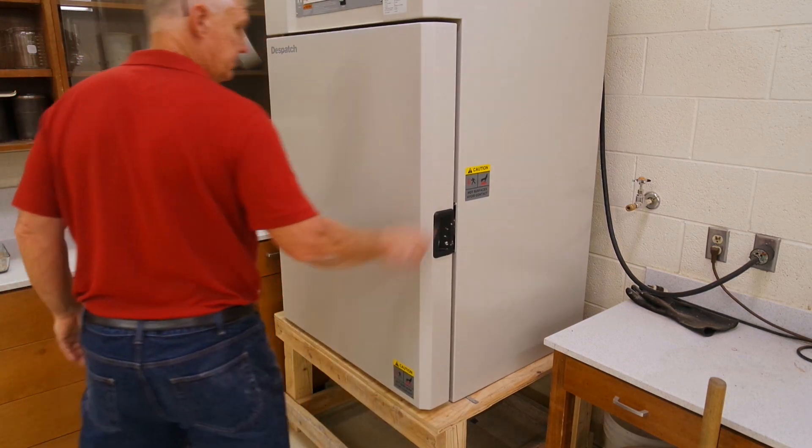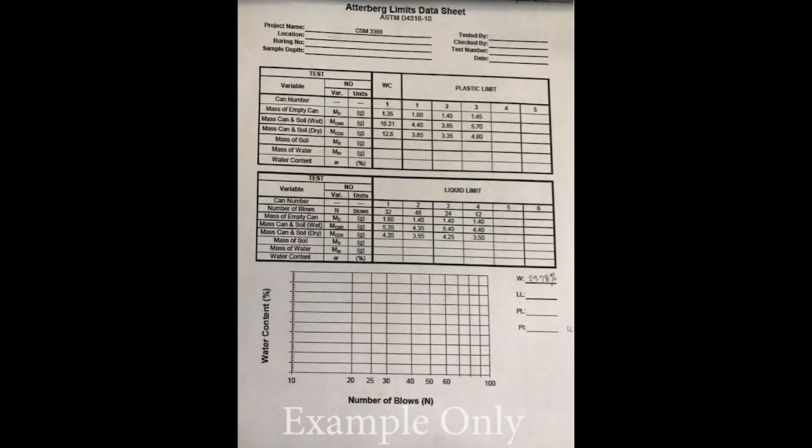After the samples are dried, cooled, and weighed, we will plot a line for the liquid limit. Where it crosses the 25 blow line is the liquid limit of this material.